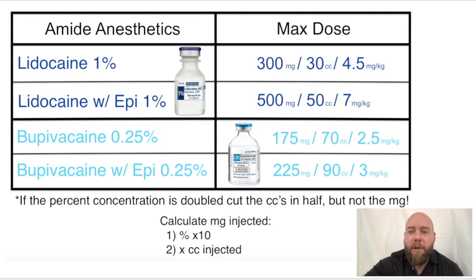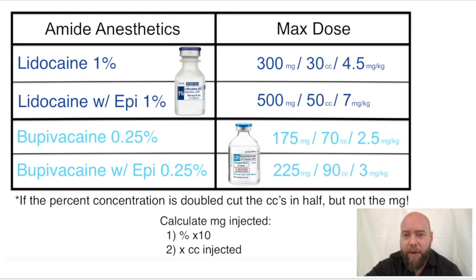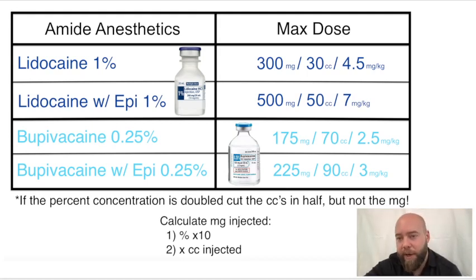Then you need to memorize the milligrams per kilogram. For lidocaine 1%, it's 4.5. Then it's 7. For bupivacaine quarter percent, it's 2.5 or 3. The 2.5 mg/kg does correlate with the quarter percent marcaine — so that's a 2.5 and a 2.5 to help you remember. Add a half and get to 3.